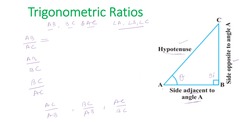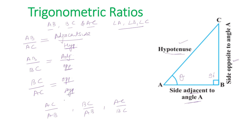If you see in the picture, AB upon AC — AB means the adjacent side and AC is the hypotenuse. AB upon BC — AB is adjacent and BC is the opposite side. BC upon AC — BC is the opposite side and AC is the hypotenuse. These are the basic side relationships for angle A (theta).